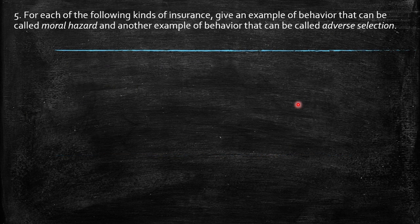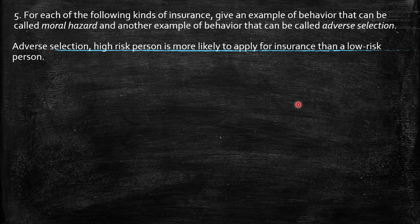The fifth question says: for each of the following kinds of insurance, give an example of behavior that can be called moral hazard, or another example of behavior that can be called adverse selection. So first of all, what is the definition of adverse selection?